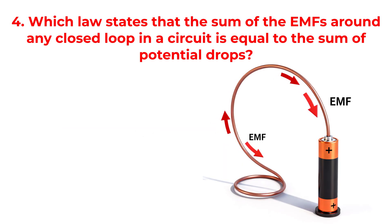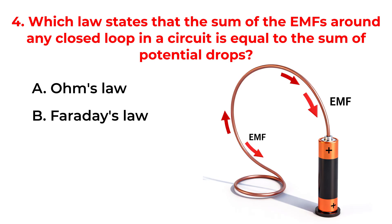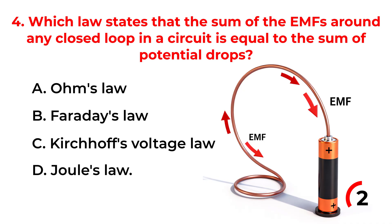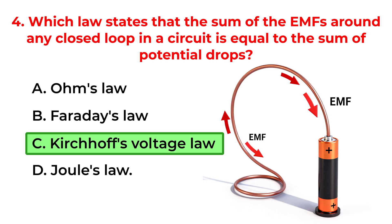Which law states that the sum of the EMFs around any closed loop in a circuit is equal to the sum of potential drops? A. Ohm's law. B. Faraday's law. C. Kirchhoff's voltage law. D. Joule's law. Correct answer is option C. Kirchhoff's voltage law.